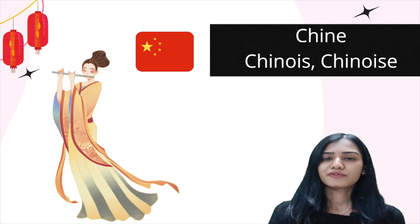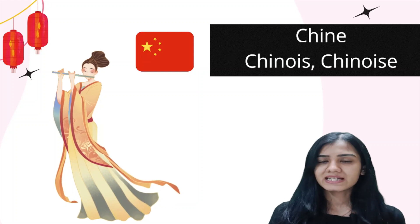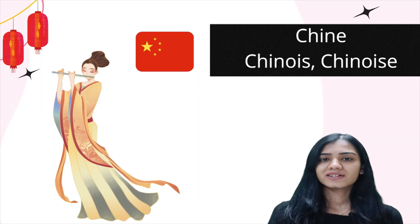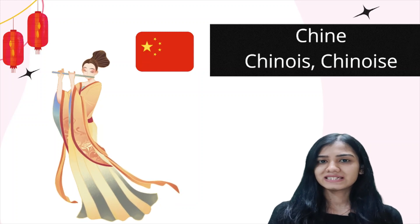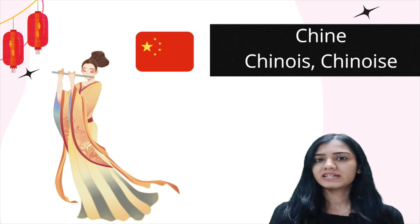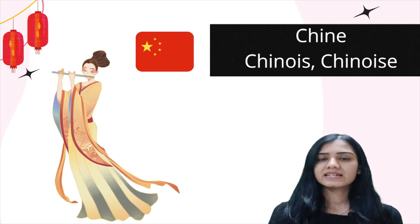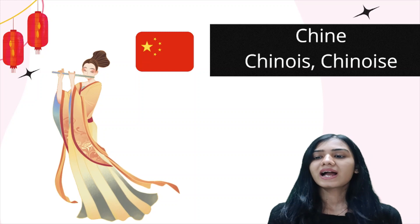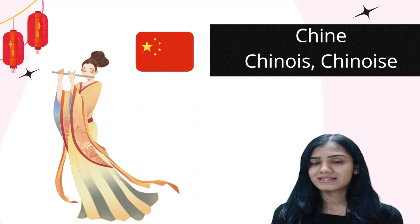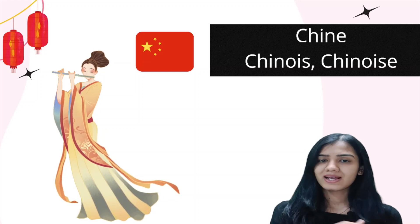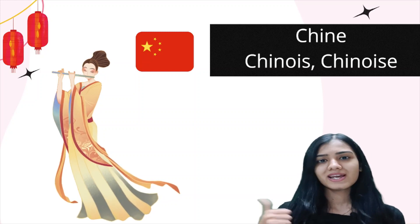For China, it's 'Chine' — 'Chine'. And for a Chinese person — the nationality — it's 'Chinois' and 'Chinoise'. 'Il est Chinois' — 'Elle est Chinoise'.